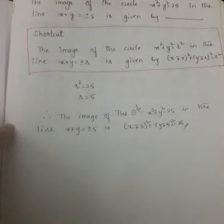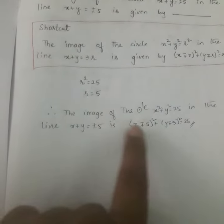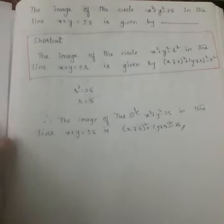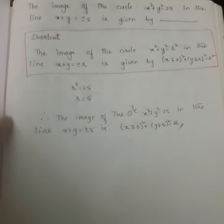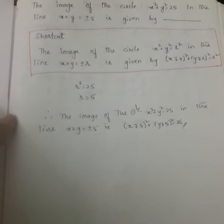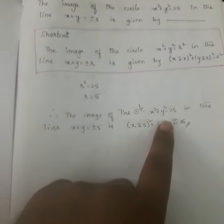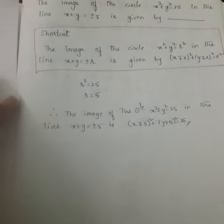So upon substituting those values I am getting the answer. That is the image of the circle in the line x + y = ±φ is (x - (+φ))² + (y - (+φ))² = 25. That will be my answer.